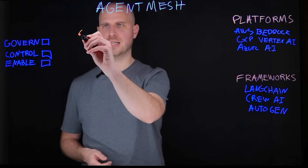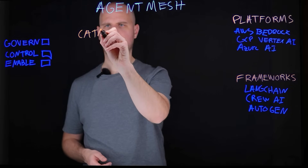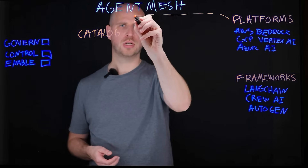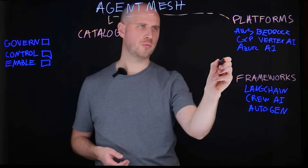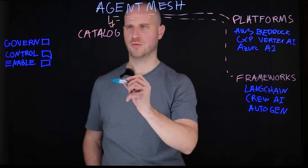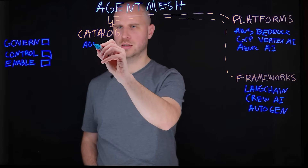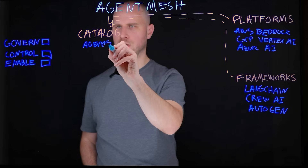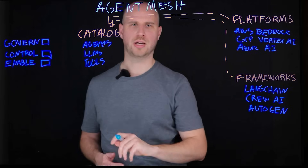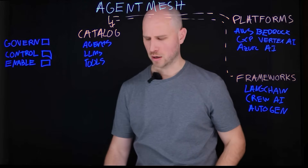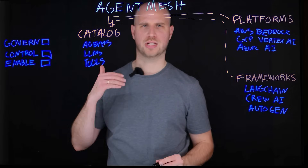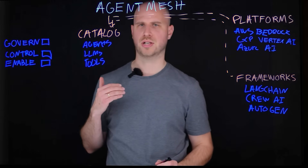The Gravity Agent Mesh has a catalog, and that catalog — regardless of you using one or multiple of these different platforms or frameworks — effectively allows you to have one single pane of glass for all the agents, all the LLMs, and all the tools that are used by those agents. Once you have all of that in one catalog, one pane of glass, where you can see details, analytics, and understand the cost implication.